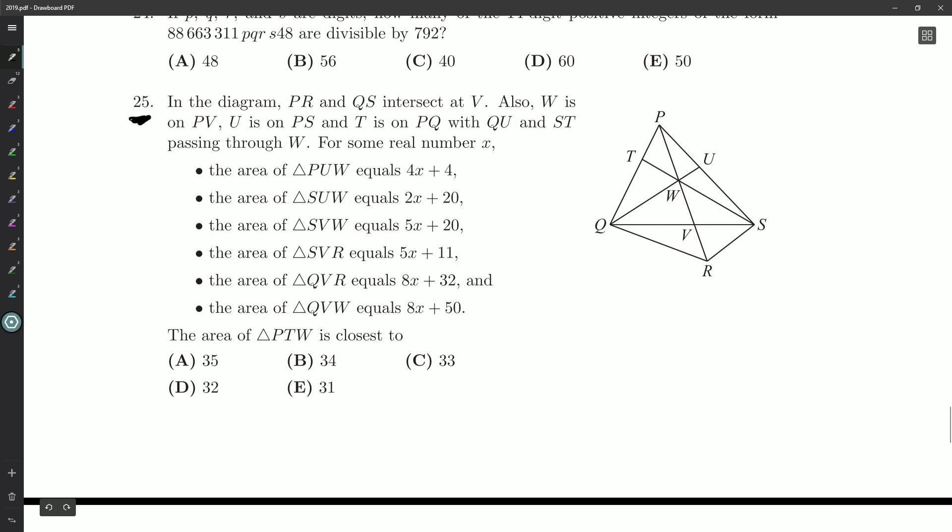In the diagram, PR and QS intersect at V. So PQRS is the quadrilateral, here's V, there's two lines intersecting. Also, W is on PV, U is on PS, T is on PQ, with QU and ST passing through W. For some real number X, we've got a lot of areas here. So I'm going to draw my picture a little bit bigger and label each of the areas they're talking about.